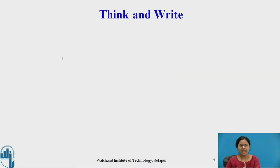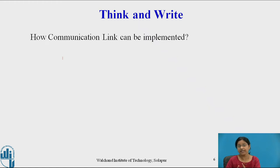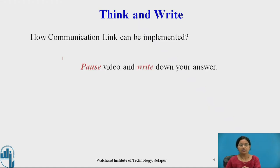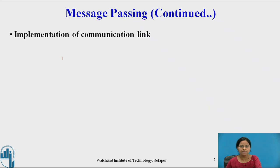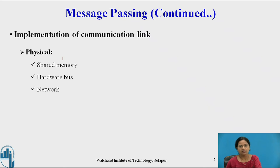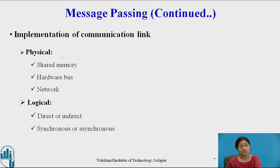Now pause the video and think about how a communication link can be implemented — there are two ways: physical and logical. The communication link can be implemented physically using shared memory, hardware bus, or network. In the logical way, there are different types: direct or indirect mechanism, synchronous or asynchronous mechanism, and automatic or explicit buffering mechanism. We are going to focus on the logical implementation of the communication link.